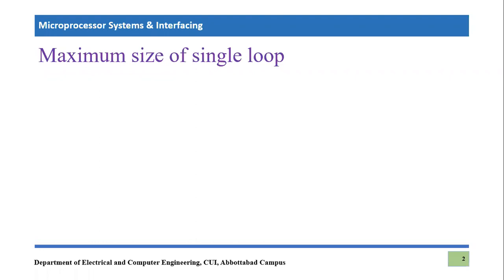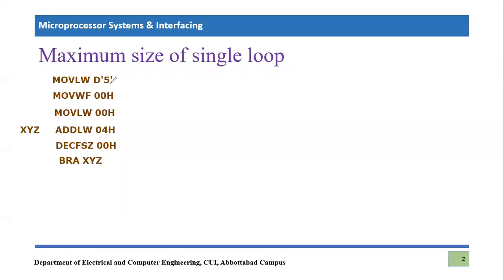In example one we added a value in the working register five times. Let's redo the example, and this time we will try to understand the maximum size of a single loop — we will understand this term using a program. This program is adding 0x04 in the working register five times. Let's understand this program line by line.